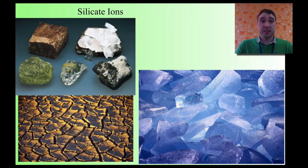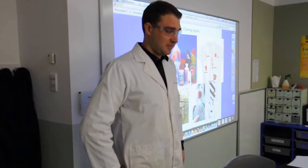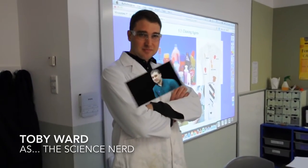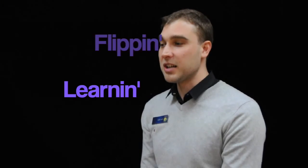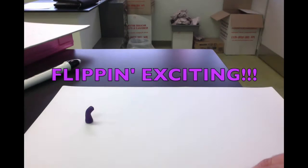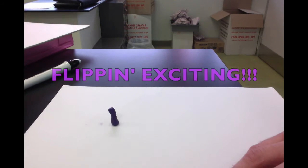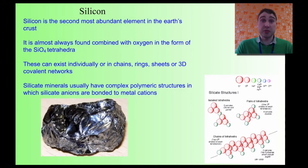Howdy, today I'm Flipping Science. We're going to be looking at silicate ions. Silicon is very important — it's the second most common element in the Earth's crust and is found combined with oxygen to form silicon tetrahedra.